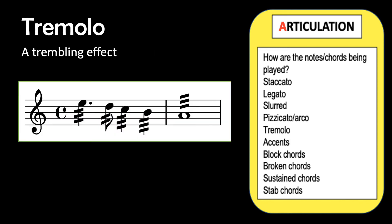Tremolo is a trembling effect created by repeating notes extremely quickly. It's often used on string instruments, as in this example from a Schubert string quartet. It's also used on the mandolin or bouzouki.